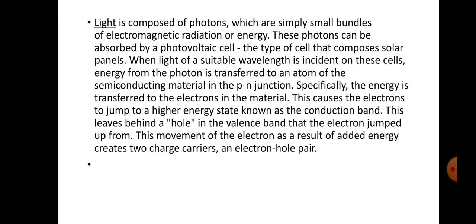Light is composed of photons, which are simply small bundles of electromagnetic radiation or energy. These photons can be absorbed by the photovoltaic cell — the photons or sunlight will be incident on the solar panel, and the photovoltaic cells in the solar panel will absorb the photons from the sunlight. When light of a suitable wavelength is incident on the cell, energy from the photon is transferred to an atom of the semiconducting materials in the P-N junction — specifically, the energy is transferred to the electrons in the P-N junction.